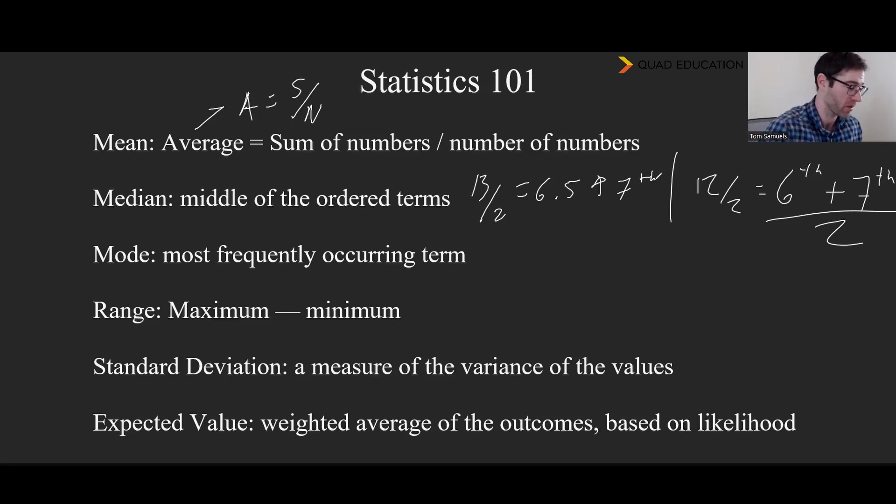Next, we have the mode and the mode is the most frequently occurring term. So whichever term is in there more often than the other ones. You're always going to have an average for a set of terms, but there may not be a mode for a set of terms. Once in a while, you'll see the term bimodal on maybe an ACT is usually the wrong answer for something. And all that means is just a set of terms that has two modes. So two different values that occur way more often than the other values.